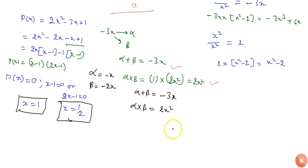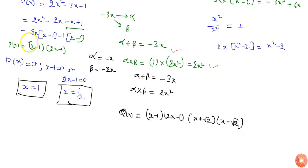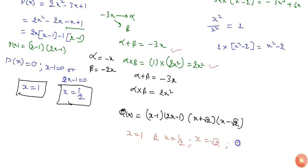So q(x) = (2x - 1)(x - 1)(x + √2)(x - √2). The zeros of q(x) are x = 1, x = 1/2, x = √2, and x = -√2.